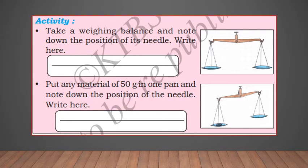The next property is: matter has mass. Take a weighing balance and note the position of its needle — it will be in the center because both pans are at the same weight. Now put any material of 50 grams in one pan and note the position of the needle — it will shift towards the side where you placed the matter. This shows that matter has mass.